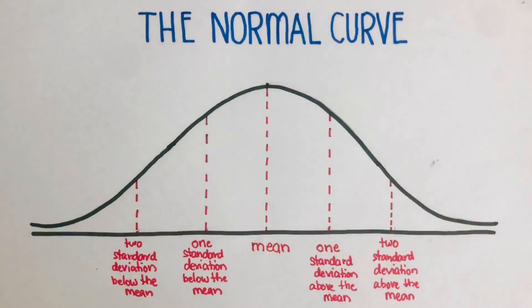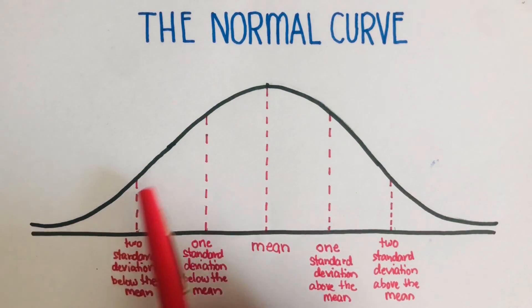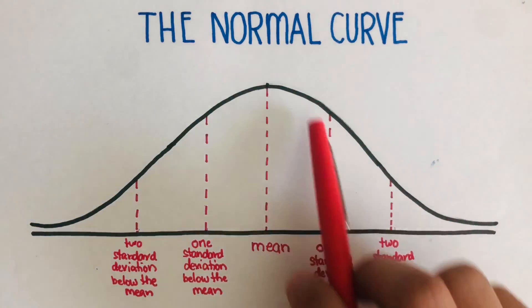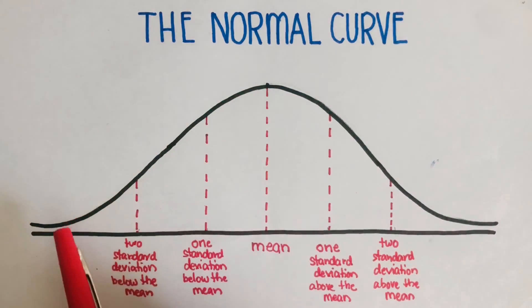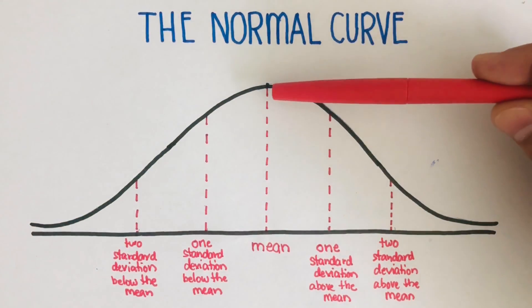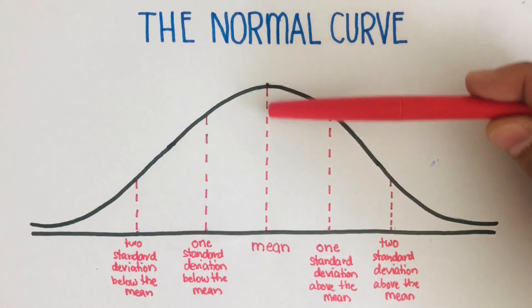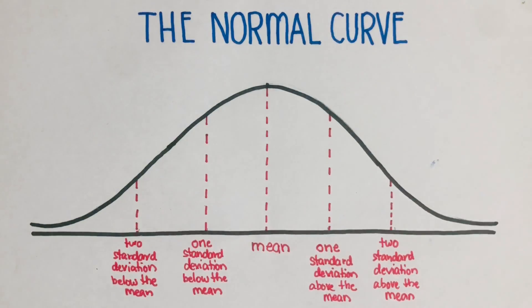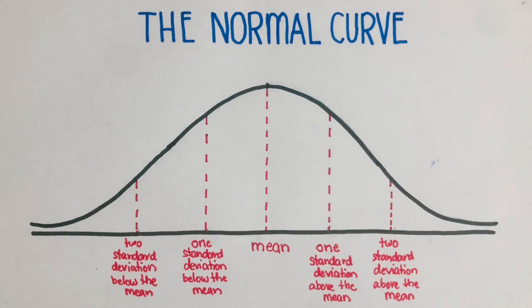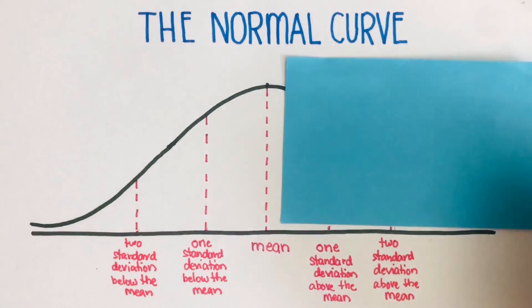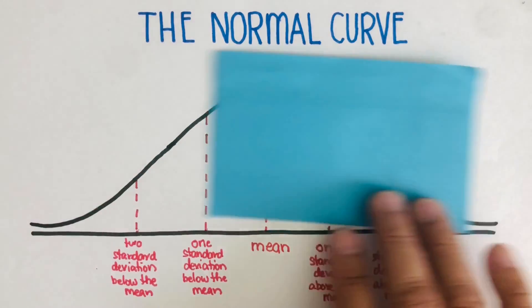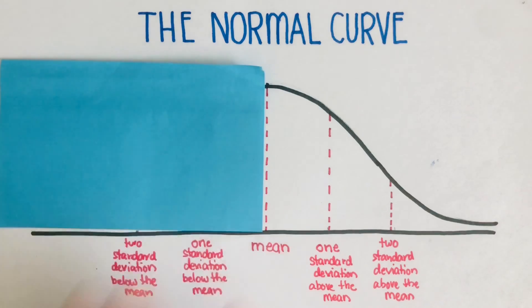The normal curve is sometimes called the bell curve because the shape of this curve is like a bell. Notice that the center of this normal curve is the mean, and this mean divides the curve into two parts — the left side and the right side.